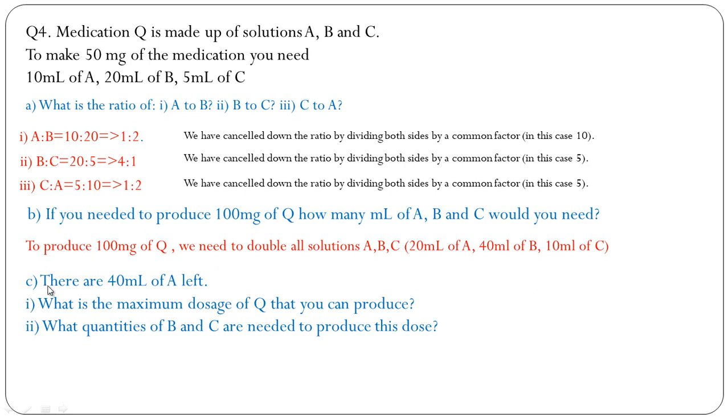Part (c): There are 40 ml of A left. What is the maximum dose of Q that you can produce, and what quantities of B and C are needed to produce this dose? From 10 ml of A we can produce 50 mg of medication.